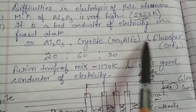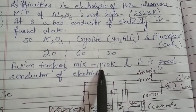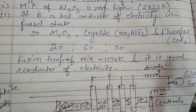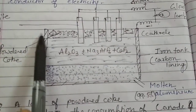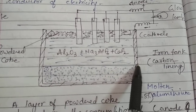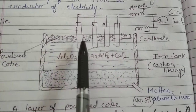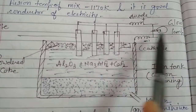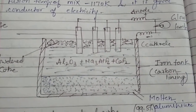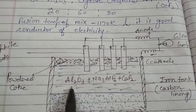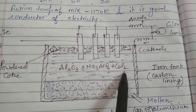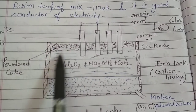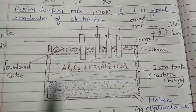The fusion temperature of this mixture is around 1170 K and it is a good conductor of electricity. For doing this process, we take an apparatus which has an iron tank with carbon lining that works like the cathode. Graphite rods suspended into the electrolyte work like the anode, and a glowing lamp is attached to it. We take the fusion mixture of alumina, Na₃AlF₆, and CaF₂, and place a layer of powdered coke on the surface of this electrolyte.